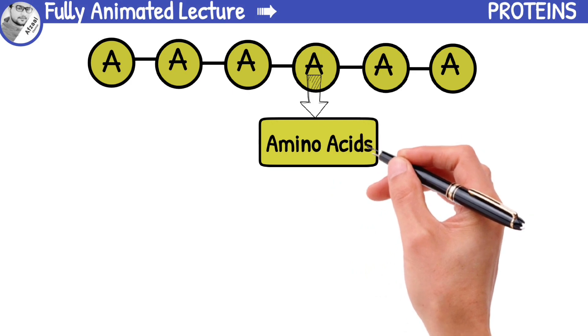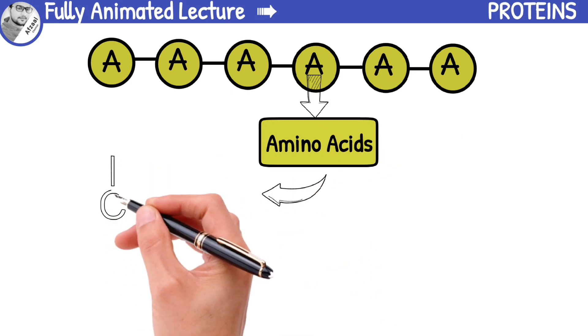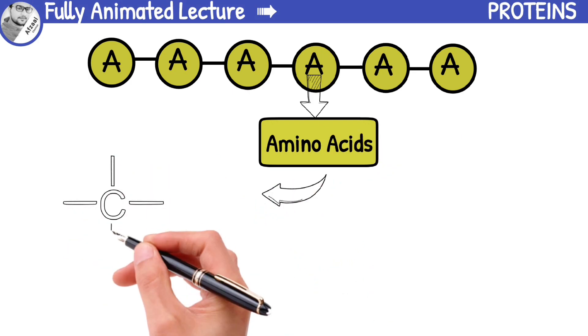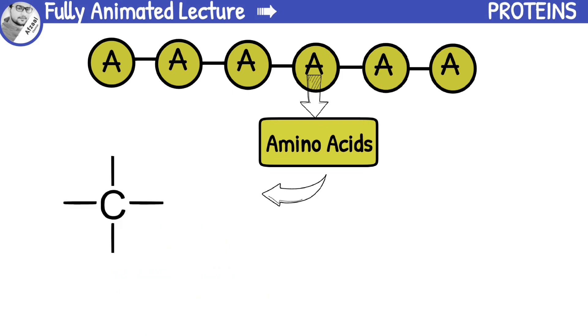The structure of an amino acid consists of a central carbon atom, also known as the alpha carbon, which is bonded to four different groups.